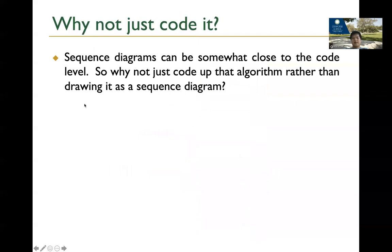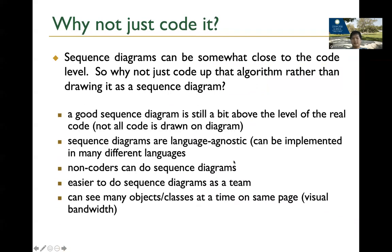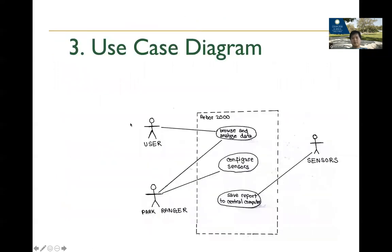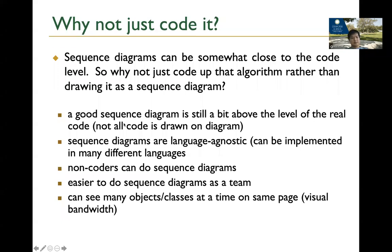Why draw diagrams instead of just writing code? It's still higher-level — you don't need to worry about low-level code, variables, and so on. It's also language-independent, so the same idea can be implemented in different languages. It's relatively easier, especially for non-developers. The whole purpose of a UML diagram is to visualize at a high level and give you an easy way to communicate and understand the system. Any questions about sequence diagrams?